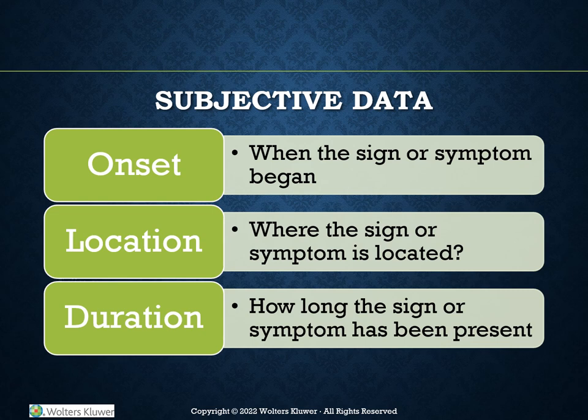Onset: when the sign or symptom began — a specific date, time, or approximation. Location: where the sign or symptom is located, for example, chest, left side. Duration: how long the sign or symptom has been present, for example, one day — comes on for about 30 minutes, then eases up.